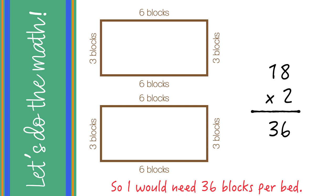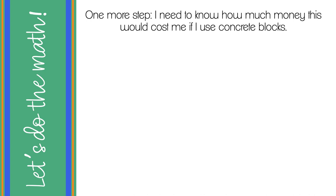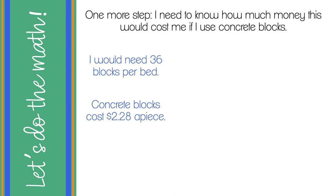Now there's one more step, because I need to know how much money this will cost me if I use the concrete blocks. I need 36 blocks per bed, and concrete blocks cost $2.28 a piece, so now we have to do a little bit of long multiplication. Yes, we could do this very easily on a calculator, but let's write this out so we can practice how this problem actually works.